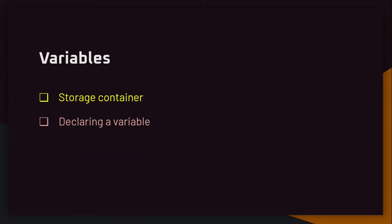Before we get to the types, we also have to talk about the rules of naming our variable. You can't just name your variable anything — there are some rules to follow, some characters you're not supposed to have in your variable name. The syntax is: data type, then variable name, then assignment operator. The assignment operator, which we'll cover in the second tutorial, is used to assign a value to a variable.